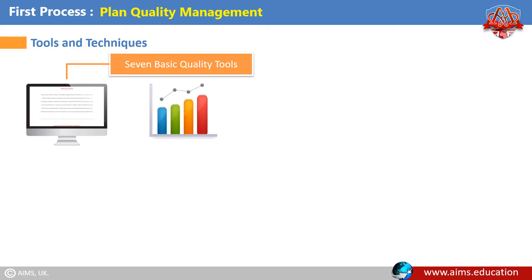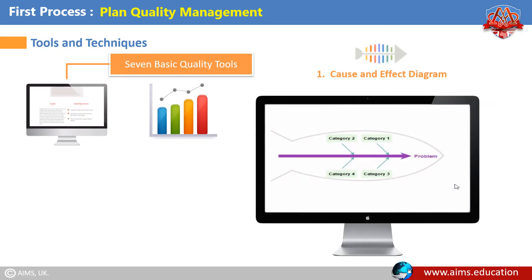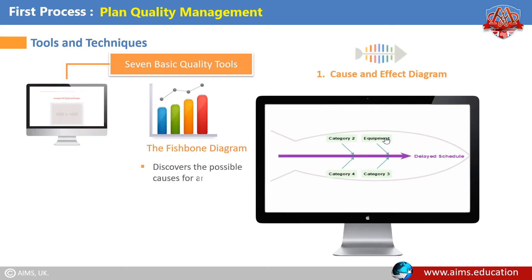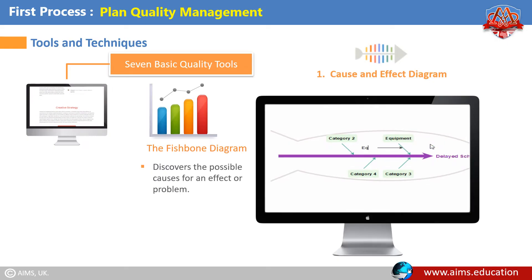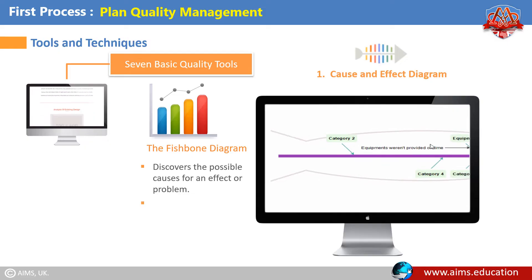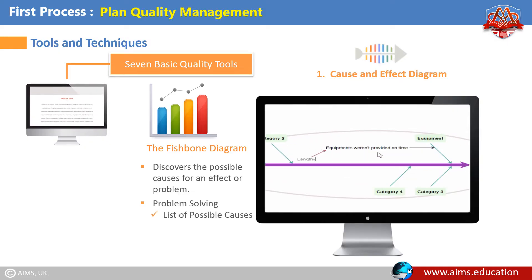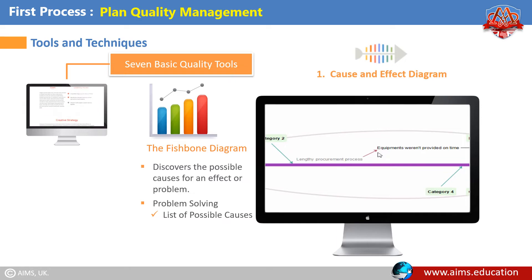The first basic quality tool — the cause and effect diagram, also called the fishbone diagram. This tool discovers the possible causes for an effect or problem, and acts as a first step in problem solving by creating a list of possible causes. Let's see how the fishbone diagram works.